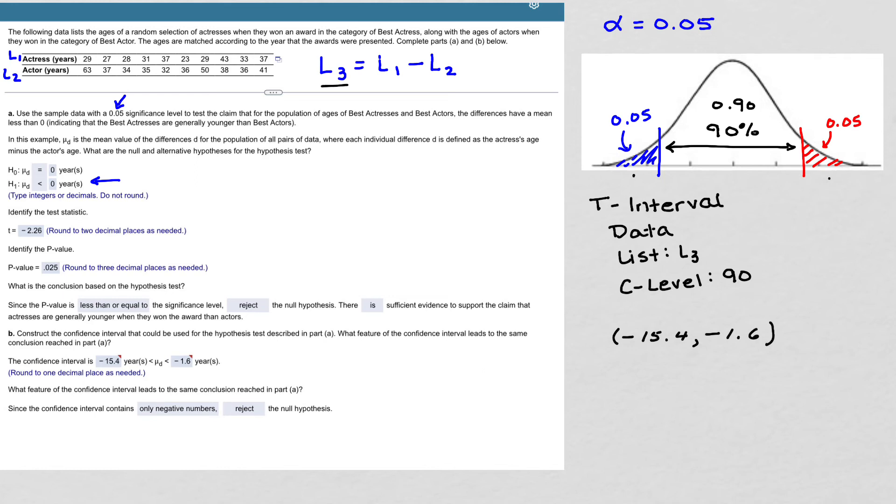So when I look at this confidence interval, it is only negative numbers. And what that tells me is that since 0 is not in the interval, we don't believe that there's a likelihood that the values are the same in the two lists. So since we only have negative numbers, we reject the null hypothesis. And that's how you do that problem.